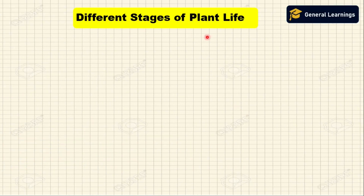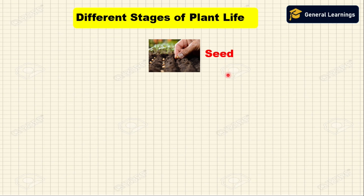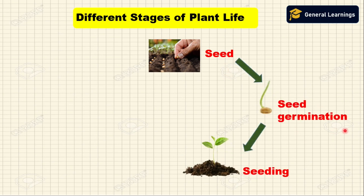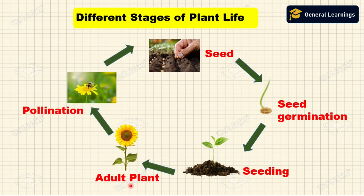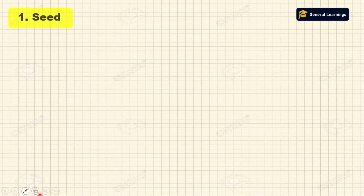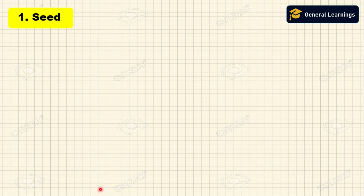Next we will see the different stages of the plant life cycle. The stages of the plant life cycle include: seed, seed germination, seedling, adult plant, and pollination. Let us discuss the life cycle of plants in detail.